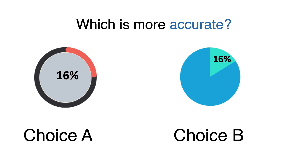Which of these two examples is more accurate — choice A or choice B? If you selected choice B, you are correct. Choice A is representing approximately 25%, but the text states that it is 16%. The visualization is not accurate.